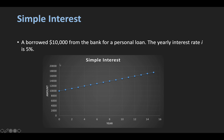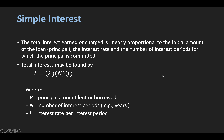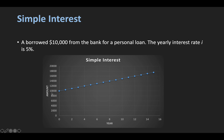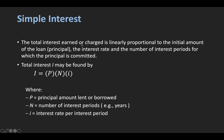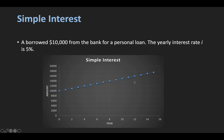Here's another example: if someone borrows $10,000 from the bank for a personal loan at a yearly interest rate of 5%. At year zero it's $10,000; at year one it increases by 5% based on the principal again; year two increases another 5% based on the principal, and so on. If you draw this, you can see it's a linear increase — that's why we call it linear. The total interest is linearly proportional to the initial principal.